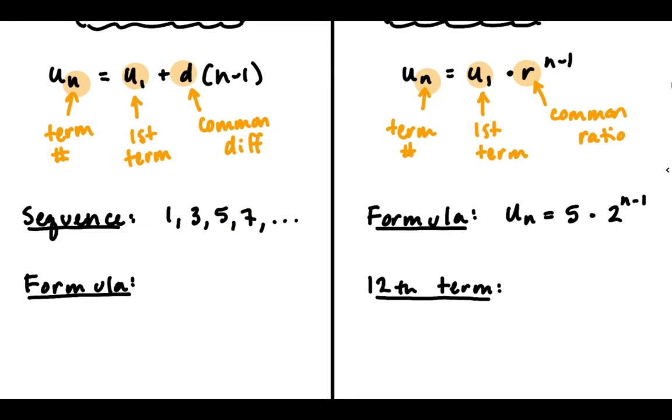The first thing is coming up with an explicit formula given a sequence, and the second thing is using an explicit formula to find a term in the sequence. Over here, we're going to practice writing it. This is an arithmetic sequence with common difference positive 2, because I'm adding 2 every time.